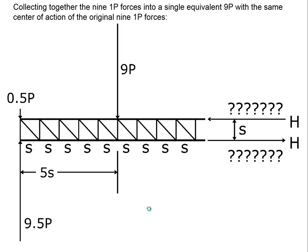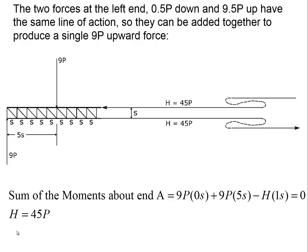We can also combine this half-P force with the 9.5P reaction force because they are along the same line of action — the half-P is downward, the 9.5P is upward, and the net effect is a 9P upward force. So we end up with a free body that has a 9P downward force and a 9P upward force, separated from each other by a distance of 5S. These two equal and opposite forces cancel each other in terms of the sum of vertical forces, but they do not cancel in terms of moment because they don't share the same line of action.